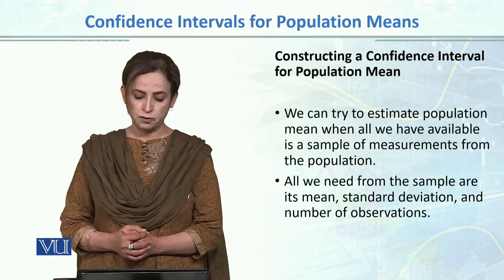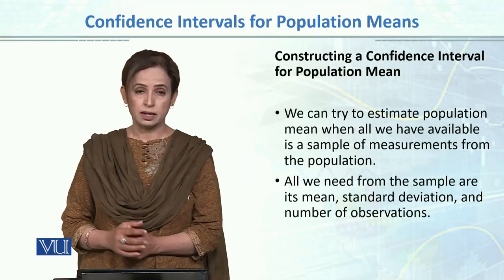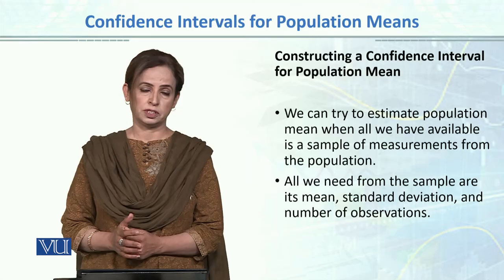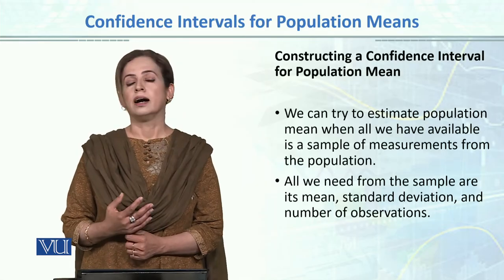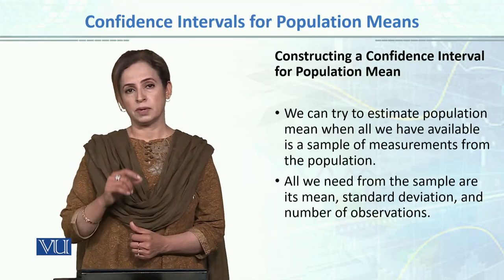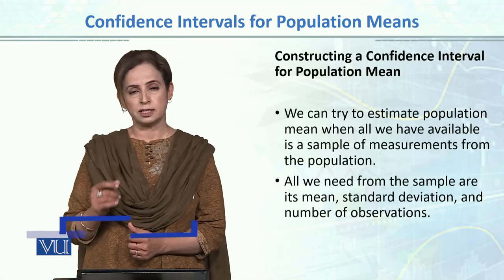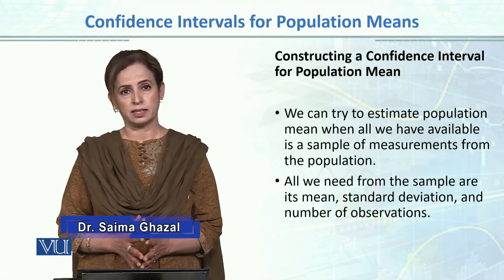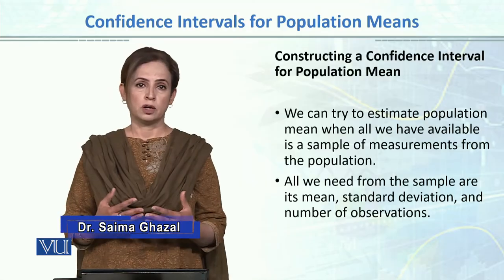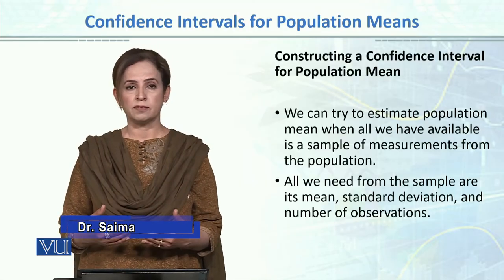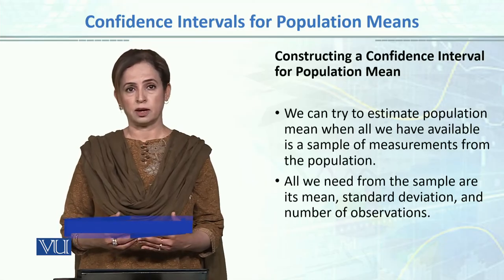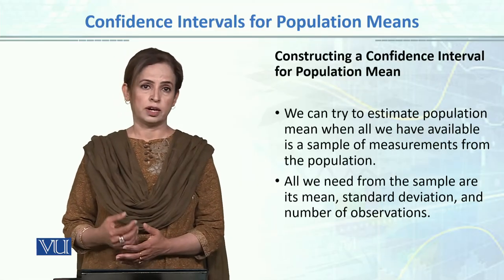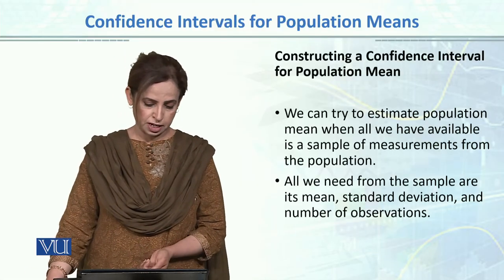All we need from the sample are its mean, standard deviation, and the number of observations. We have in the proportion sampling distribution, which we formed confidence intervals in the same way. We will use the same formula and we need three values to form confidence intervals: the mean, the standard deviation or standard error, and the sample size n.